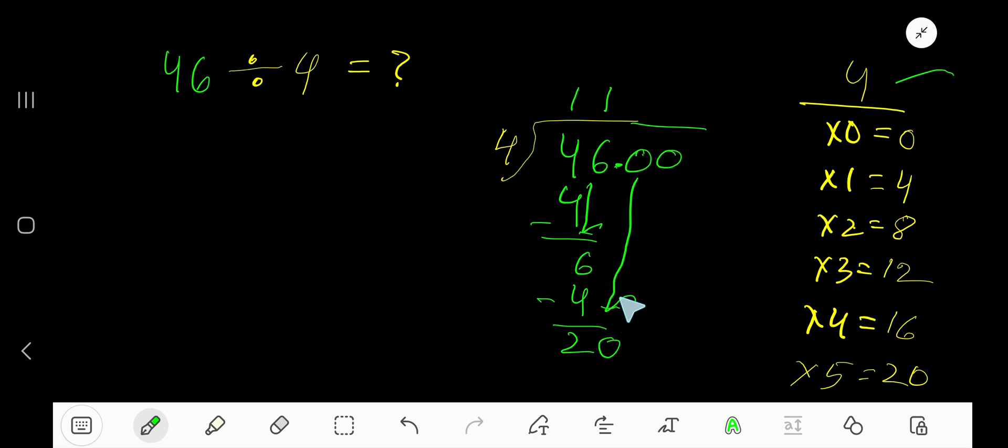Bring down the first 0. Before the 0 there is a decimal. Decimal must come to the question directly. 4 goes into 20 how many times? 4 goes into 20, 5 times. 5 times 4 is 20.